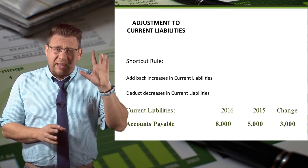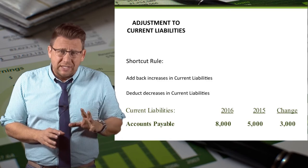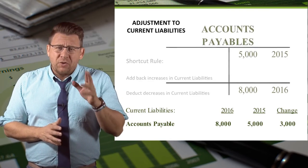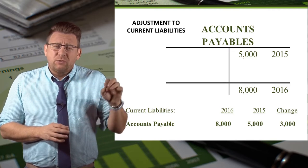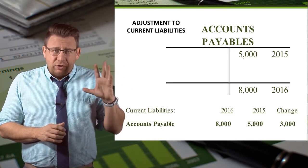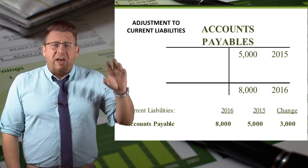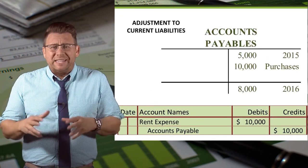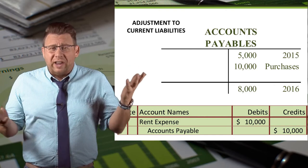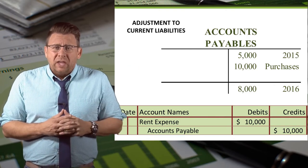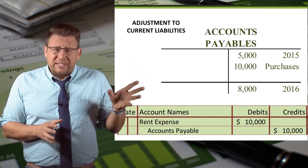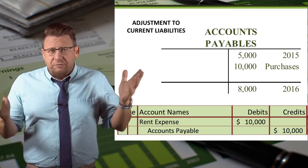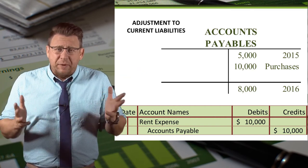Let's use the example where accounts payable increased from $5,000 to $8,000. Another way to look at this account is with the T-account format. You can see the beginning balance is $5,000 and the ending balance is $8,000. When a company receives an invoice for warehouse rent as an example, it debits rent expense and credits accounts payable. In this example, I just made up that that expense is $10,000.